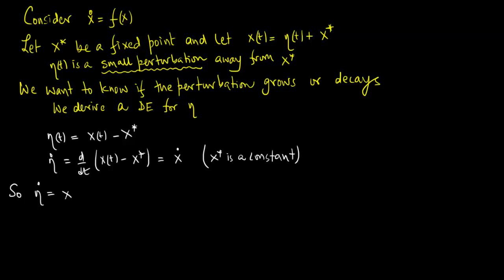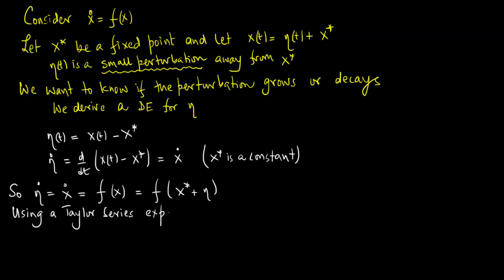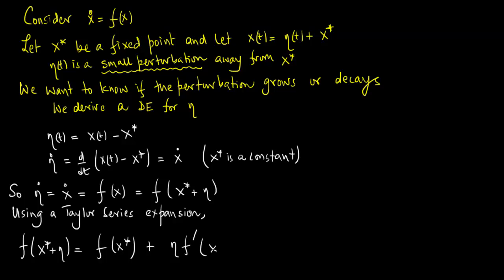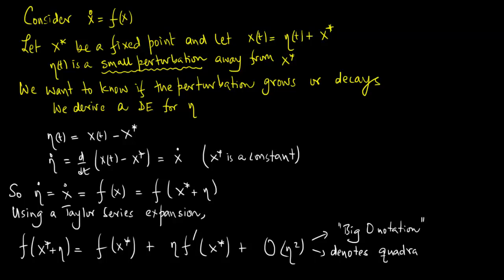So η_dot = x_dot = f(x) = f(x* + η). Using a Taylor series expansion, f(x* + η) = f(x*) + η·f′(x*) + terms of order η². Note that the big-O notation here denotes quadratically small terms in η.